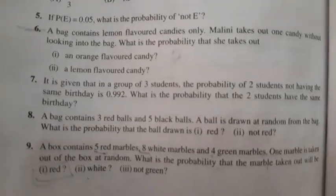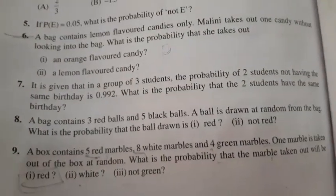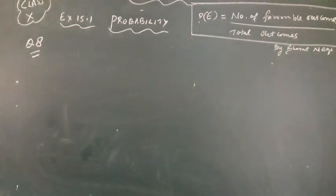Now question number 8. A bag contains 3 red balls and 5 black balls. A ball is drawn at random from the bag. What is the probability that the ball drawn is first part red or second part not red.